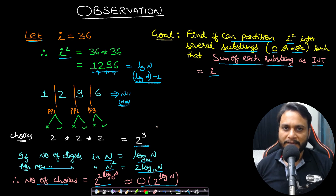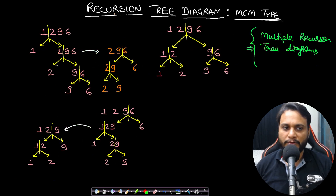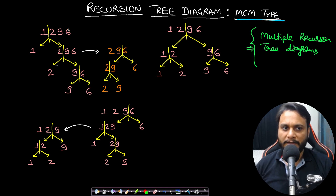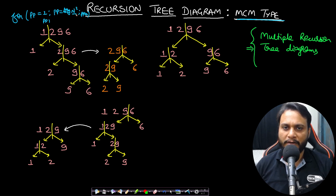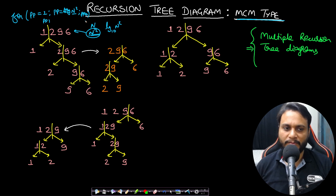I'll show the recursion tree for 1296, which is analogous to matrix chain multiplication. We loop over all partition points from index 1 to the number of digits in i². For the first partition point we split '1296' into '1' and '296'. There are two options: take 296 and add it to 1, getting 297, and compare with i=36; since 297≠36, keep trying all partitions.